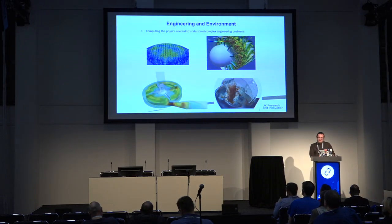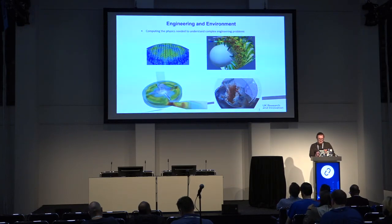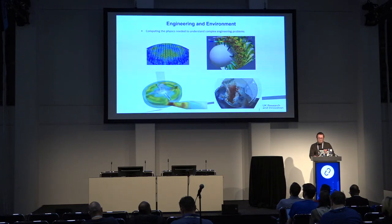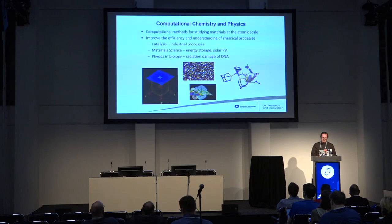There are various simulations we do as part of this in computational biology and life sciences, and things in engineering and environment areas. The diagrams you can see here show, in the top left, a nuclear reactor and how the heat load is distributed; the second is how air moves around in a turbine; the third is how blood moves through a blood pump; and the fourth is how water moves in a washing machine. There's also computational chemistry — materials science and how it applies to biology and physics as well.